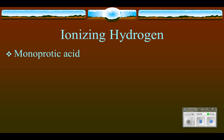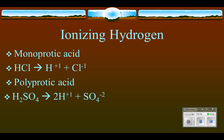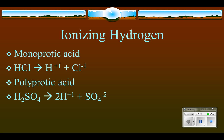A monoprotic acid like hydrochloric acid will ionize in water to form one hydrogen ion (H⁺) and the chloride ion. A polyprotic acid like sulfuric acid will ionize in water to form two hydrogen ions and a sulfate ion. The difference is that we get one hydrogen ion per HCl, and two hydrogen ions per H₂SO₄ — so sulfuric acid is twice as good at being an acid because it provides twice as much hydrogen.